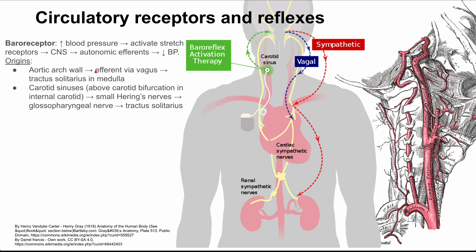There are two big sites that are worth knowing. There's the aortic arch wall, which sends efferents through the vagus nerve and then through the tractus solitarius in the medulla. The carotid sinus is the one depicted in this diagram, and it's located just above the carotid bifurcation in the internal carotid.